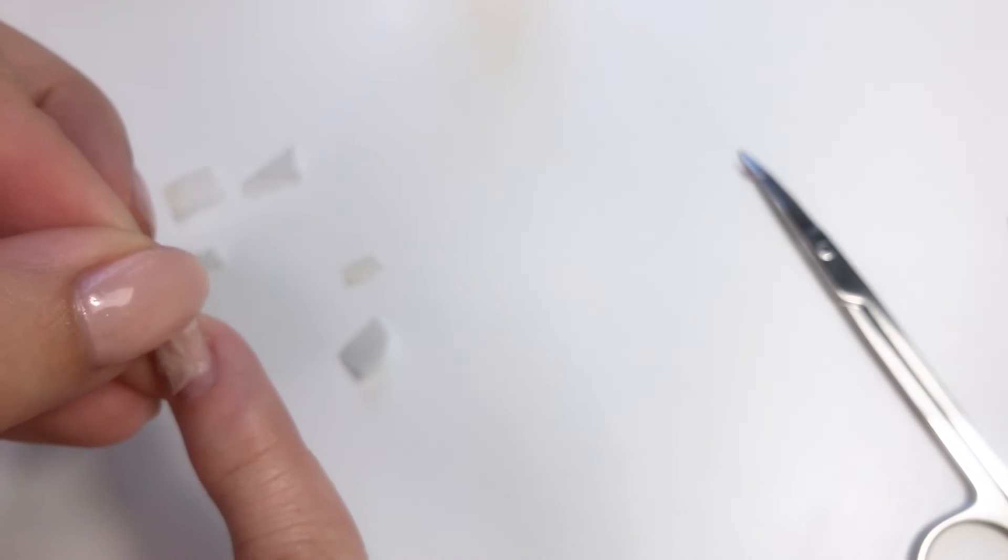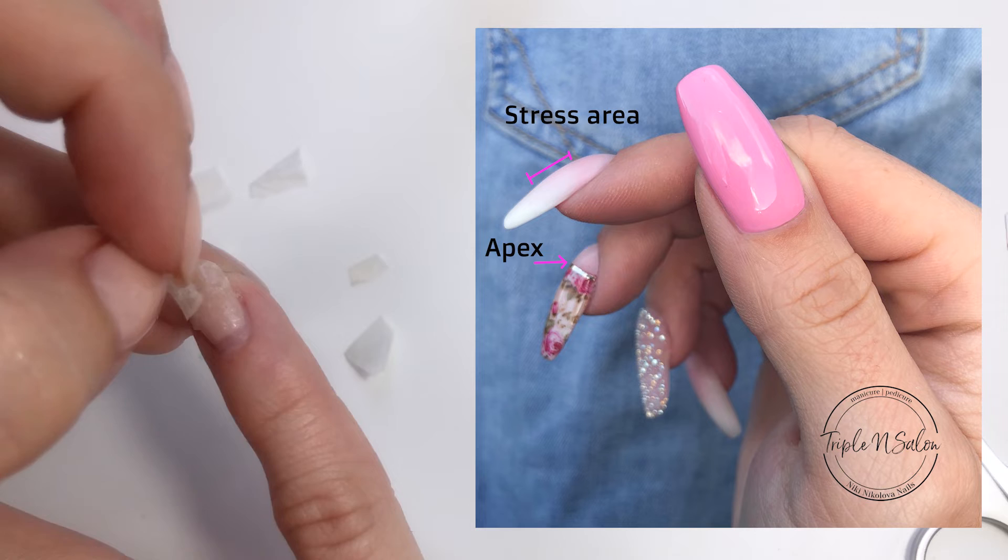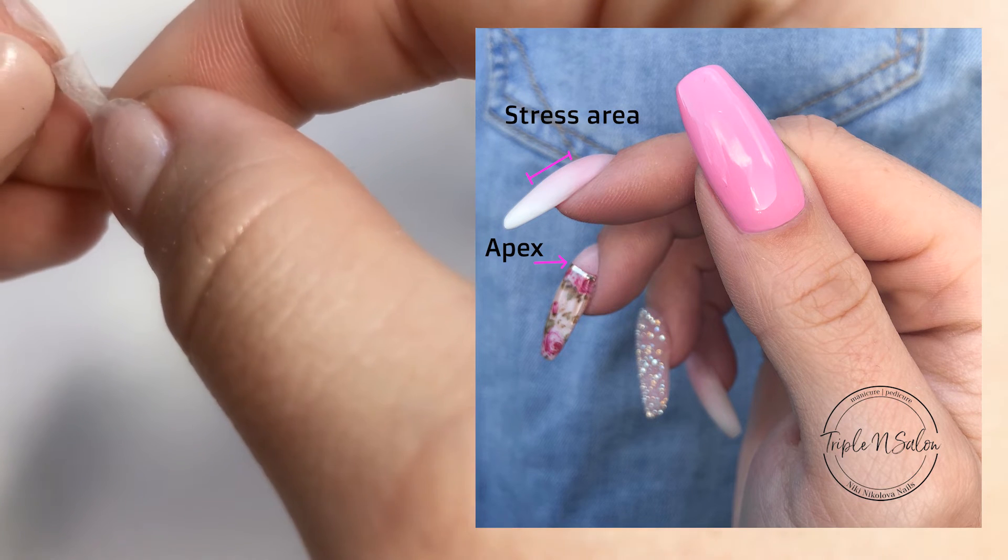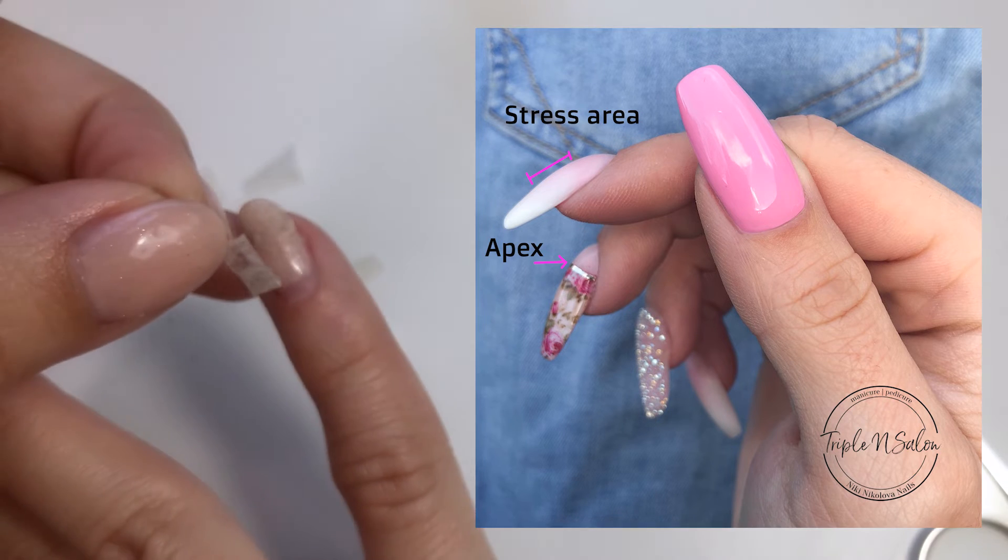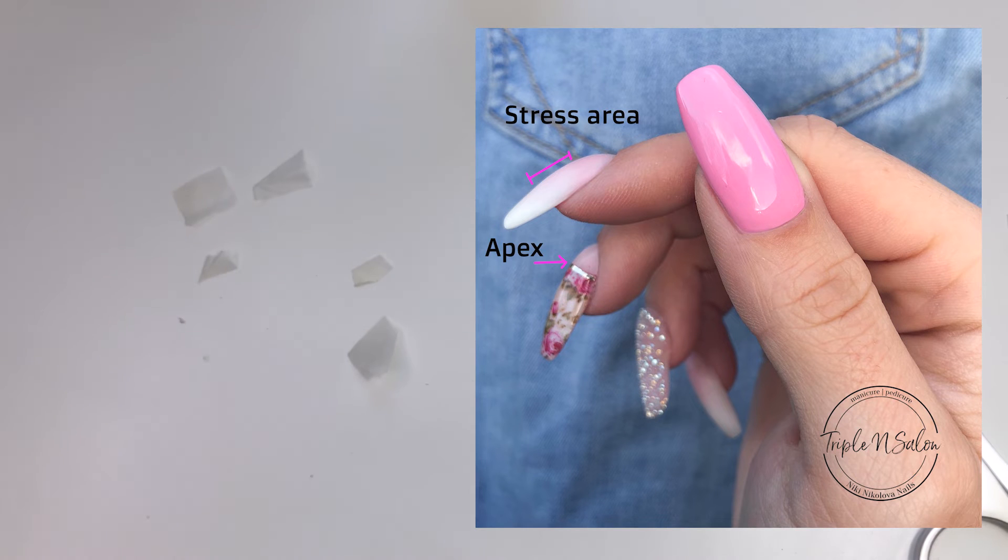We also want to use a few pieces of the fabric because we want to create an illusion of the apex. An apex is usually the highest point of an extension. It is placed in the weakest point of the nail to give it strength and balance and this usually sits in the back one third of the nail enhancement.